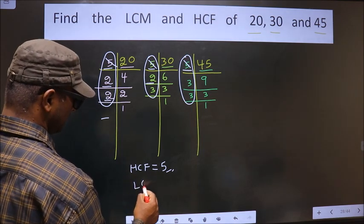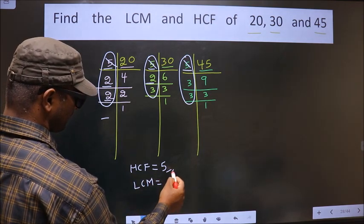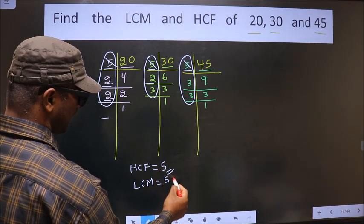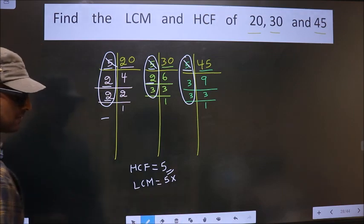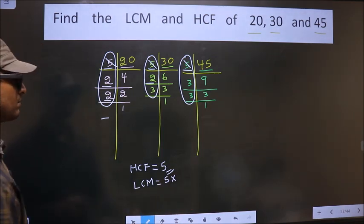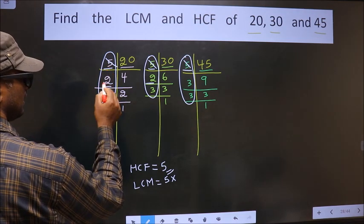Now to get LCM. To the number that you got as HCF, to that number we should multiply by certain numbers. How do we decide those numbers? See. Here 5 is cut, leave it here.